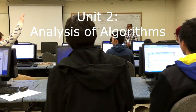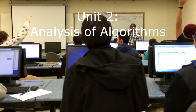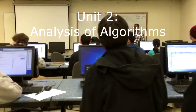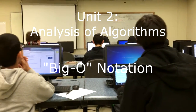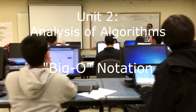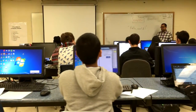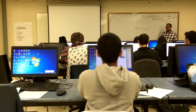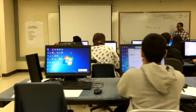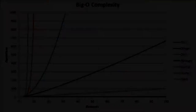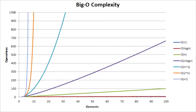The second unit of the course teaches the analysis of algorithms using what is known as Big O Notation, which is a mathematical representation of an algorithm's speed. This representation can then be compared to other algorithms. Unit 2 is also the only theoretical unit in the class.